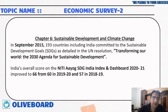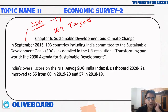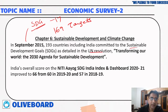Chapter 6 covers sustainable development and climate change. In September 2015, we started with sustainable development goals — 17 goals and 169 targets. 193 countries have committed to the SDGs under the UN resolution 'Transforming Our World: The 2030 Agenda for Sustainable Development.'